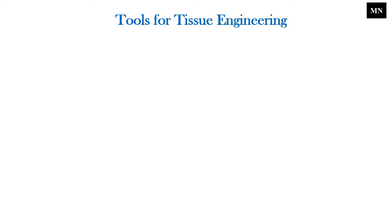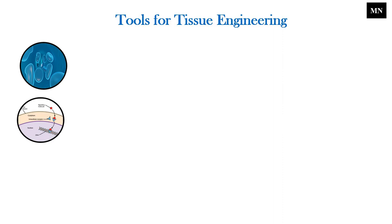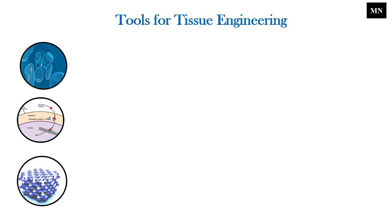Three tools used for tissue engineering are: Cells; Signals, which are provided chemically by growth factors or physically by a bioreactor; and the Scaffold, which acts as a template for tissue formation by allowing cells to migrate, adhere, and produce tissue.